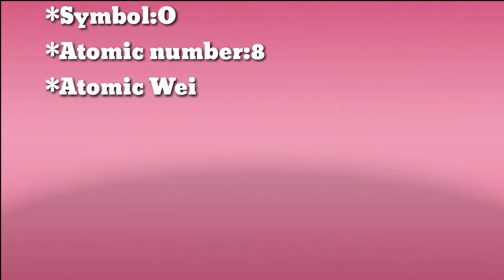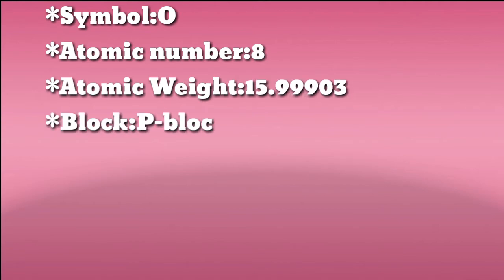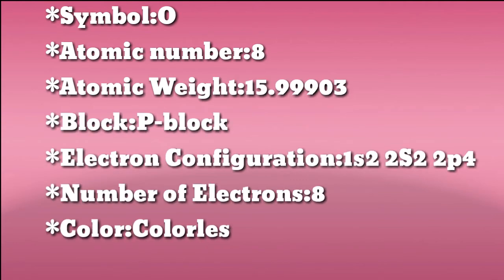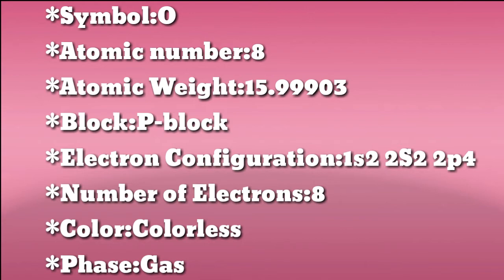Symbol: O. Atomic number: 8. Atomic weight: 15.999. Block: P Block. Electron configuration: 1s2 2s2 2p4. Number of electrons: 8.